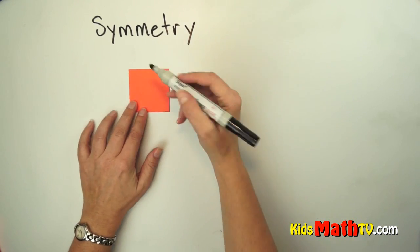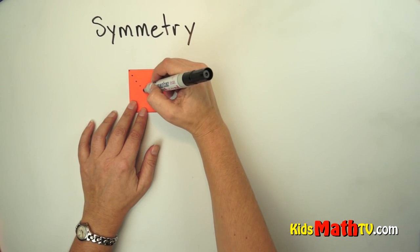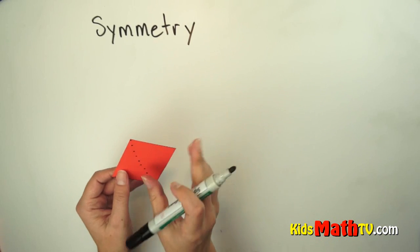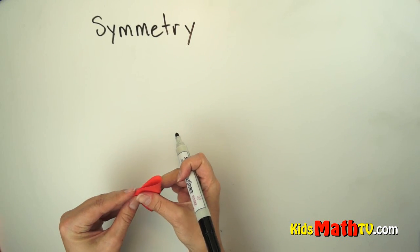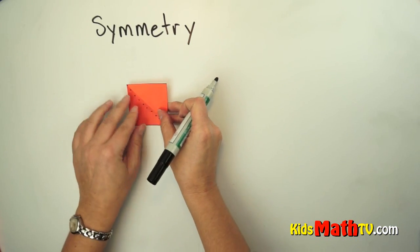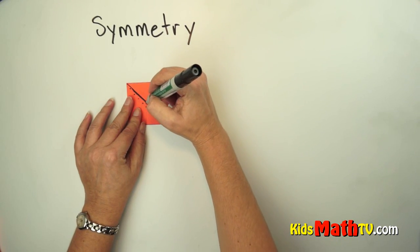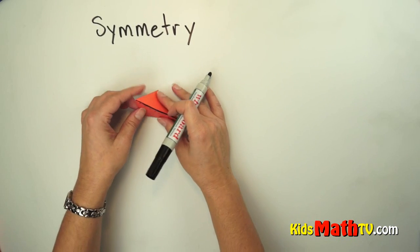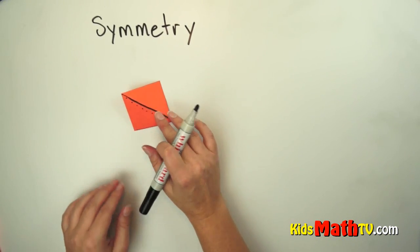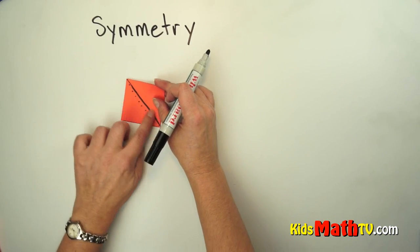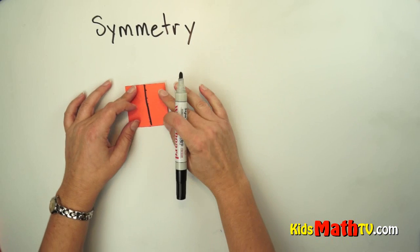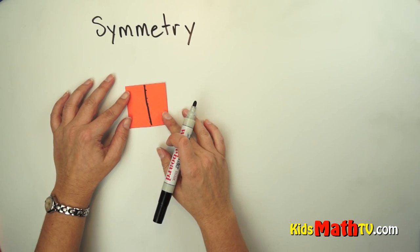We can use the same shape and have a different line of symmetry. If we were to fold this along this line, each side is exactly the same shape and the same size. This would show a line of symmetry — these two sides are exactly the same.